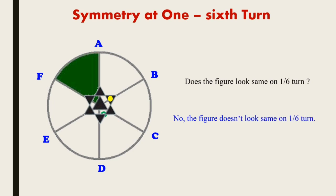We can say, my dear friends, because you can see this position — this line was here previously, and due to this triangle — one, two, three, four, five, six — these are six triangles that you can see on top. After rotation, the positions have changed, so the figure does not look the same.